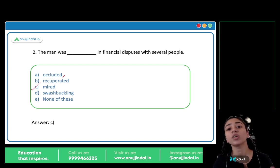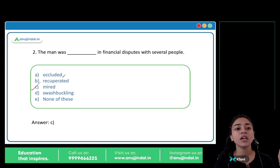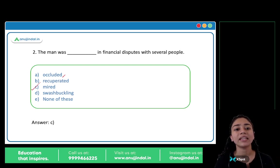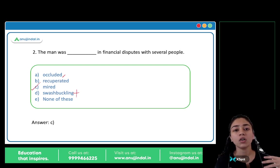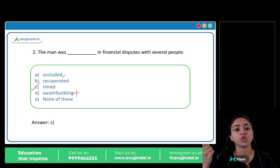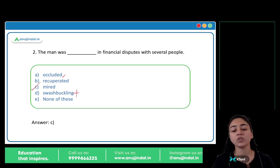Swashbuckle means to engage in a daring adventure. None of these fit the sentence. So C, mired, is your answer.